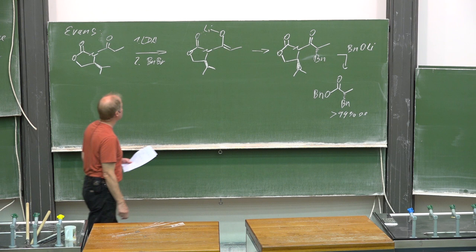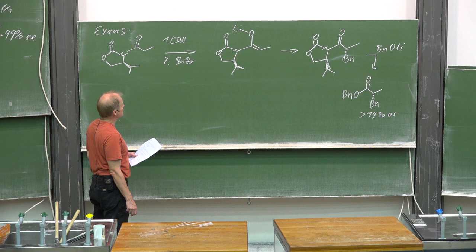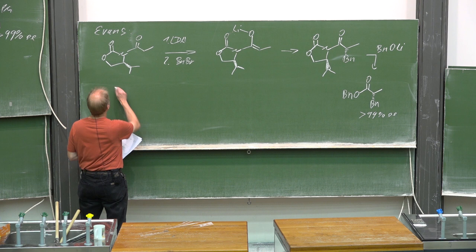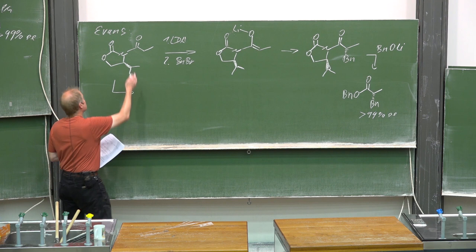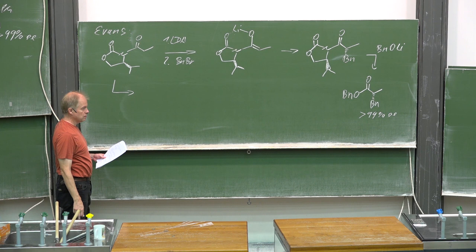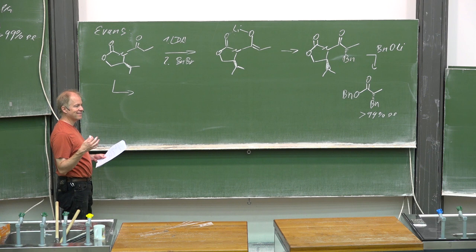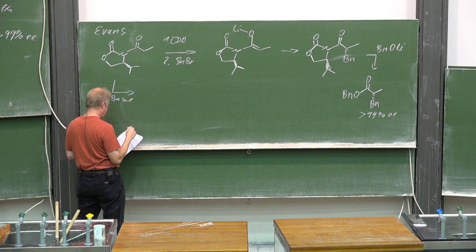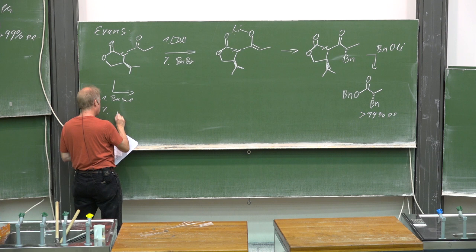Actually, Evans enolates became famous by applying the aldol addition processes. That means deprotonating here, forming very often boron enolates, and then letting them react with an aldehyde. So, base, sometimes borylation, and then with an aldehyde treatment.